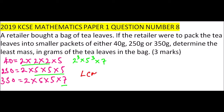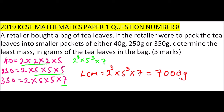The LCM equals 2 to the power of 3, which is 8, multiplied by 5 to the power of 3, multiplied by 7. When you multiply that out, you get 7,000 grams. So 7,000 grams is the least mass of the tea leaves in the bag.